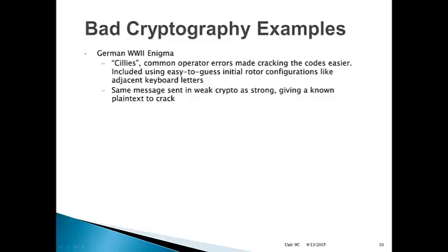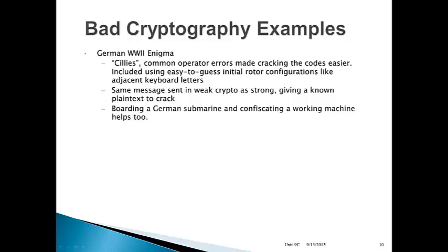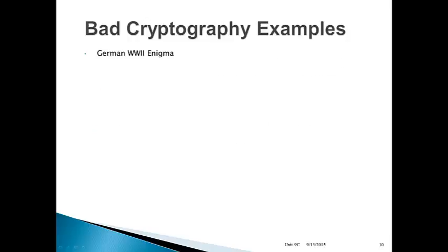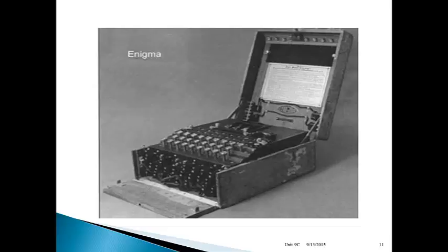At one point in the war, the Allies boarded a German submarine and confiscated the working Enigma machine — that helped a lot too. They concealed the fact that they had taken the machine by immediately sinking the submarine. In this case, it's not the flaws in the machine itself — the code was mostly broken via procedural errors, though there were some interesting quirks in the Enigma design that made it easier to break. Here's a picture of a real Enigma machine. These things are very expensive — they sometimes go on the market and sell for hundreds of thousands of dollars. An interesting side story: the famous rock star Mick Jagger is actually a collector of these machines and owns one. He actually played a walk-on role in a movie about ten years ago featuring decryption of the Enigma as a major part of the plot.